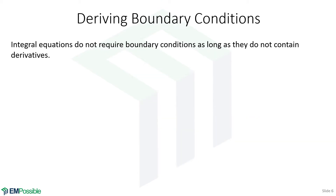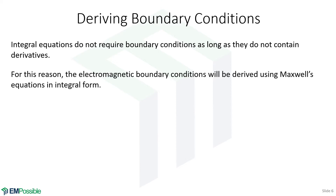How do we derive the boundary conditions? We needed them because we're using differential equations. Integral equations don't actually need boundary conditions unless they contain derivatives. So the information provided by boundary conditions must be hidden inside the integral equations. Therefore, to derive our electromagnetic boundary conditions, we will go to Maxwell's equations in integral form.